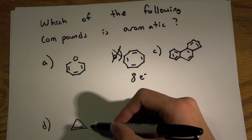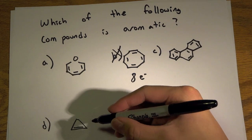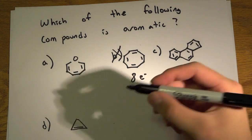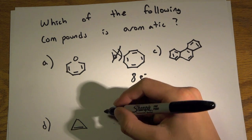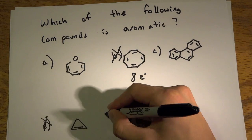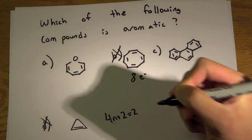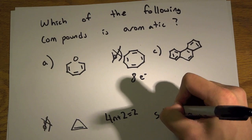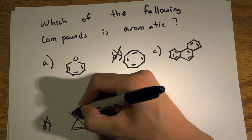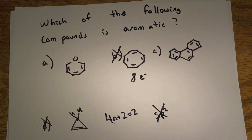Let's go to option D. How many pi electrons does it have? Well, it has 2, and so 4n plus 2 equals 2 gives n equals 0, which doesn't work. Also, it's not sp2 hybridized because of this group right here, so that would not be sp2 hybridized.